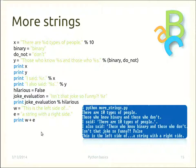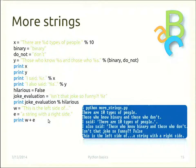Finally, the example demonstrates string concatenation: we define two strings — one for the left side and one for the right side — and print them concatenated, producing 'this is the left side of a string with a right'.